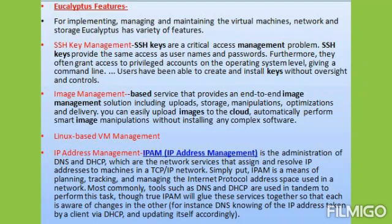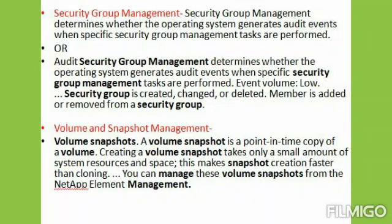Eucalyptus declared an official agreement with Amazon Web Services in March 2012. The release history of Eucalyptus is as follows: Eucalyptus 1.6 released in November 2009; Eucalyptus 2.0 released in August 2010; Eucalyptus 3.0 released in August 2012; Eucalyptus 3.3 released in June 2013; and Eucalyptus 3.4 released in August 2013.